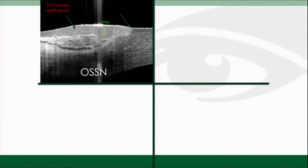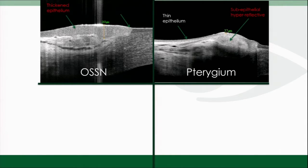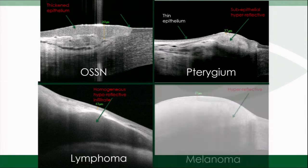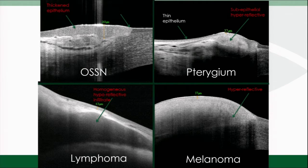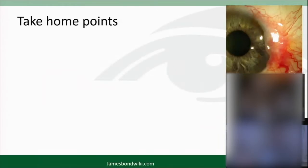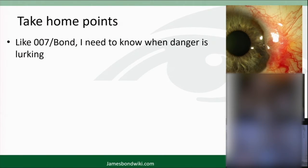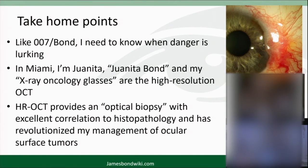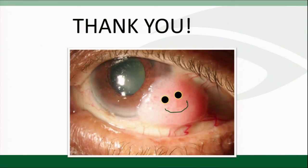In summary: for ocular surface squamous neoplasia, we see an abrupt transition from normal to abnormal with thickened hyperreflective epithelium. In pterygium, thin epithelium with subepithelial hyperreflective stringy tissue. In lymphoma, homogeneous dark hyporeflective cellular dots; in amyloid, linear dots that are not homogeneous. Melanoma shows normal epithelium with a hyperreflective cellular infiltrate below, and nevus shows multiple cysts. The take-home point: like Bond, I need to know when danger is lurking — OCT provides an optical biopsy with great correlation to histopathology and has revolutionized my practice of ocular surface oncology.